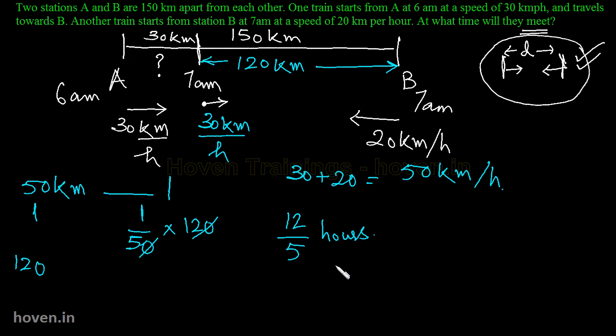Ab yeh nii ho saktah ki option meh aisa ulta siddha ho. Ki yeh toh mujhe pata nai ki yeh hours kitnye yahaan se. Toh 7 mein 12 by 5 hours add karke yeh human readable toh hai nii. Usnei option dhi hoongi. Kuch aise 9 baj ke yeh minute, 8 baj ke yeh minute, us form me dhi hoongi. Toh is wala ko mujhe pahle hours or minutes mein convert karna hai.